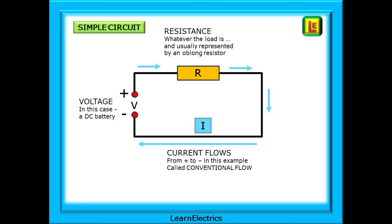There are three quantities of interest to us. There will be a voltage applied to the circuit, AC or DC, and we will assume DC voltages in this video. The resistance is whatever the load is, and this is often represented by an oblong resistor symbol. A current will flow around the circuit, and this is dependent on the values of voltage and resistance.